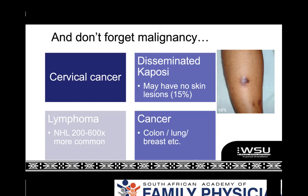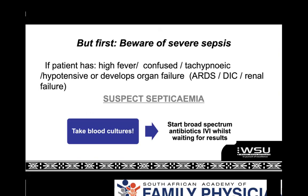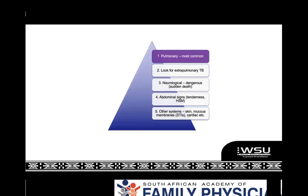We're going to use a system-by-system approach. Before going through systematically, make sure you don't miss a patient with severe sepsis. These patients don't present typically. Watch out for red flags: fever (especially in HIV patients who don't tend to make fevers), any confusion, very tachypneic, hypertensive, or other signs of organ failure — there might be massive septicemia on top of everything else. You'll admit those patients and start broad-spectrum antibiotics while working them up. If no red flags, work through the systems looking for the most common things, then the more dangerous things.